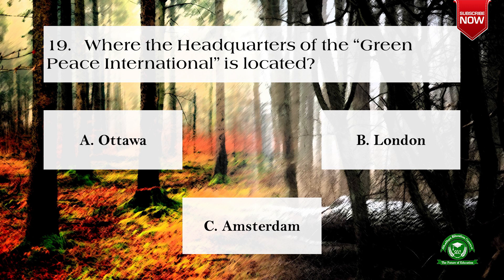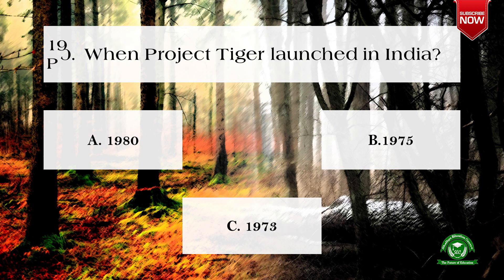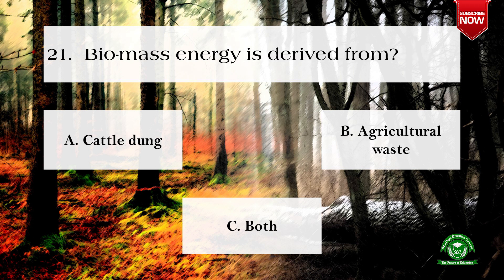Next question: where is the headquarters of Greenpeace International located? Options are: a) Ottawa, b) London, c) Amsterdam. The right option is c) Amsterdam. Next question: when was Project Tiger launched in India? Options are: 1980, 1975, and 1973. The correct option is c) 1973.